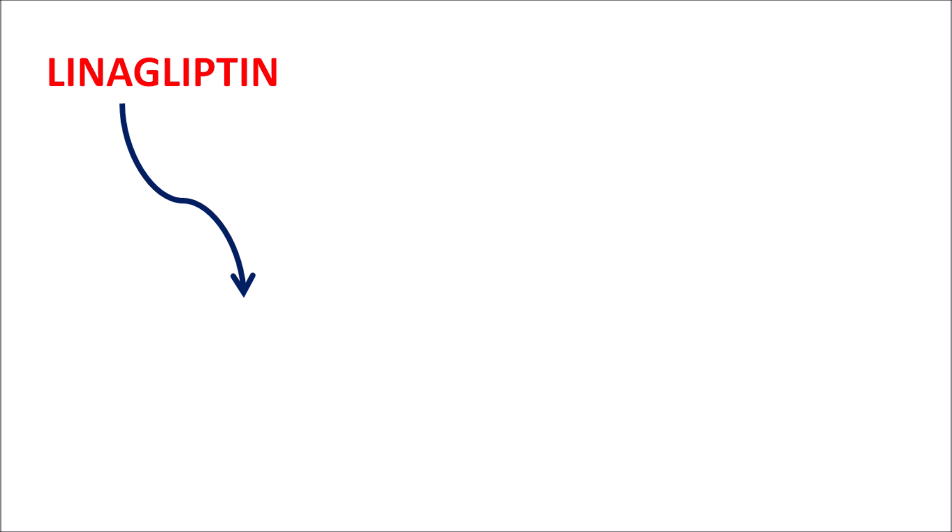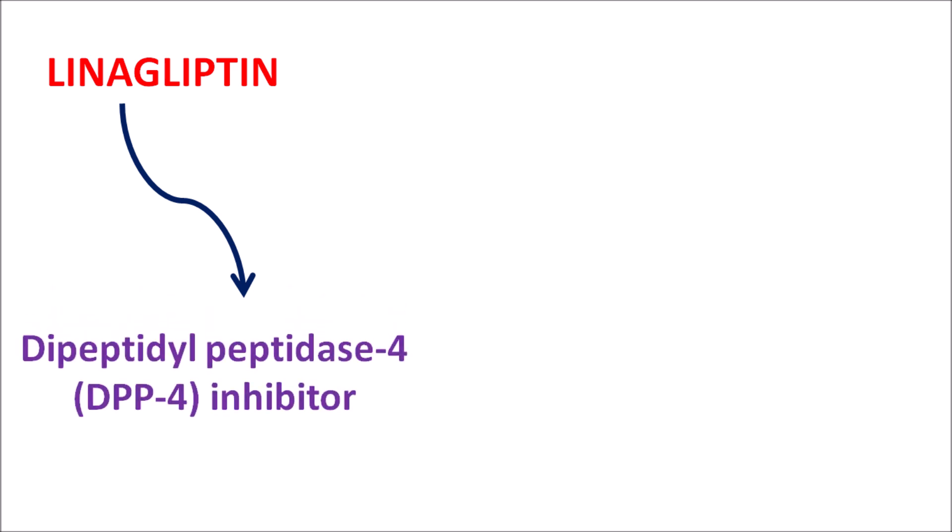Hi everyone. Today in this video let us discuss one of the anti-diabetic agents, linagliptin. Linagliptin is one of the drugs which can be identified by its suffix 'gliptin'. Glyptins are anti-diabetic agents which are classified as DPP4 inhibitors, dipeptidyl peptidase 4 inhibitors.